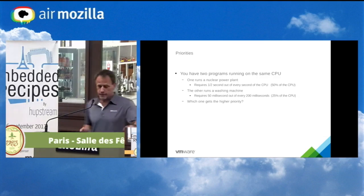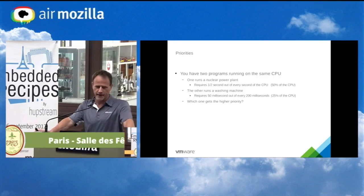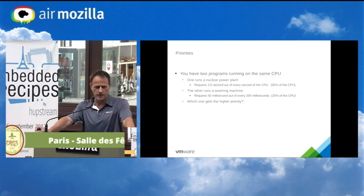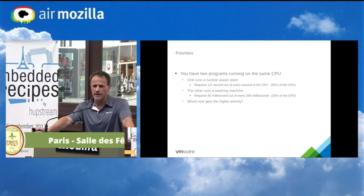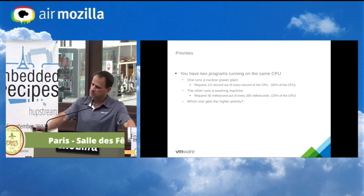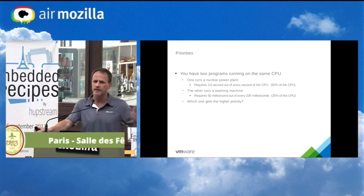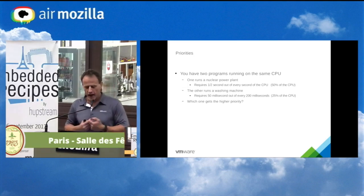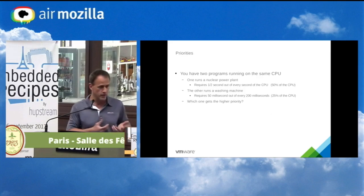Say you have a nuclear power plant trying to save money, so it has one computer with one CPU and has to run two applications. One application makes sure the nuclear power plant doesn't blow up. The other runs a washing machine to clean the lab coats of the engineers. The nuclear power plant takes 50% of the CPU — it only needs to run half a second every second. If it doesn't get that half second, the plant becomes unstable. The washing machine needs about 25% of the CPU, running 200 milliseconds every 50 milliseconds.